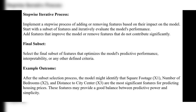Select the final subset of features that optimizes the model's predictive performance, interpretability, or any other defined criteria. After the subset selection process, the model might identify that square footage (x1), number of bedrooms (x2), and distance to city center (x3) are the most significant features for predicting house prices. The remaining features — presence of nearby schools (x4) and crime rate (x5) — are not important for predicting the house price and are not relevant to our dataset, so they are removed by backward elimination. These selected features provide a good balance between predictive power and simplicity.